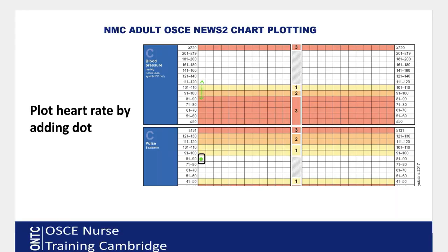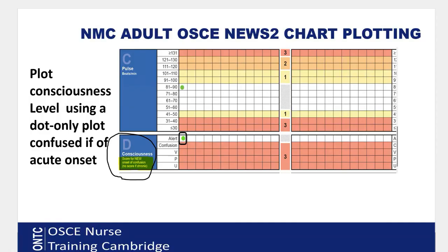Heart rate is plotted with a dot in the correct box. Keep your dots within the boxes — do not touch the lines. Just place the dot neatly inside the correct box.